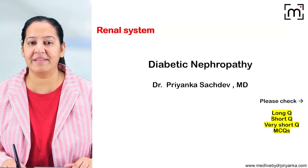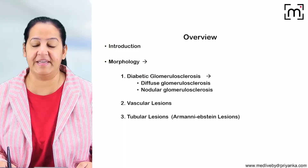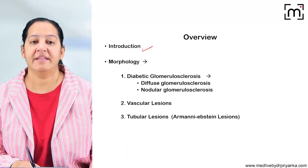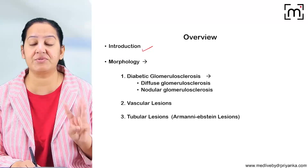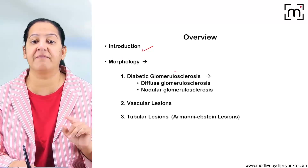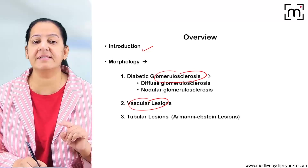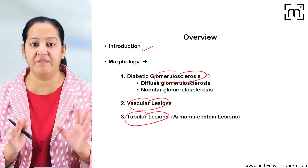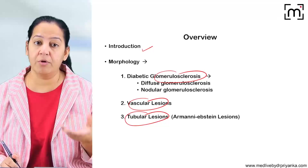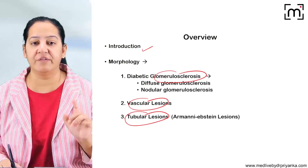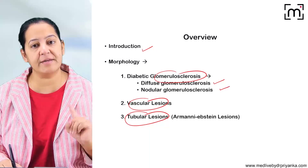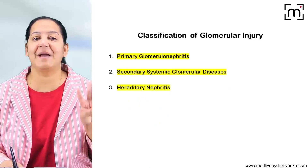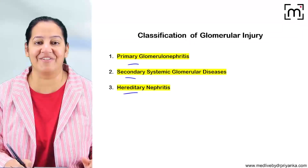In diabetic nephropathy, first we will cover the introduction, then the morphology. In the morphology, three structures are involved in the kidney: number one the glomerulus, number two the blood vessels, and number three the tubules. The changes in the glomerulus are of two patterns: diffuse glomerulosclerosis and nodular glomerulosclerosis.